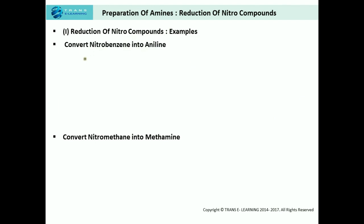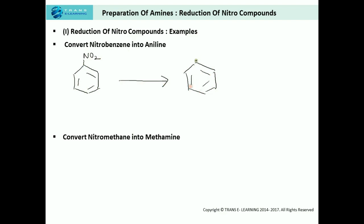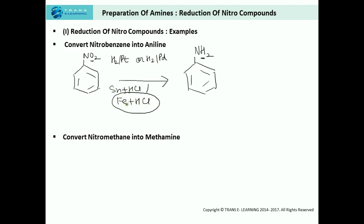Let's practice two examples. First: converting nitrobenzene into aniline. We write the reactant nitrobenzene and the product aniline (—NH₂). The oxygen atoms are replaced by hydrogen atoms, meaning reduction of the nitro compound is taking place. We can do this using H₂/Pt in ethanol, or Sn + HCl, or Fe + HCl — with Fe + HCl being the best method.